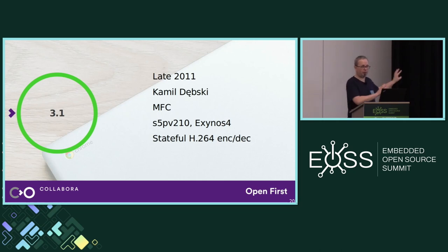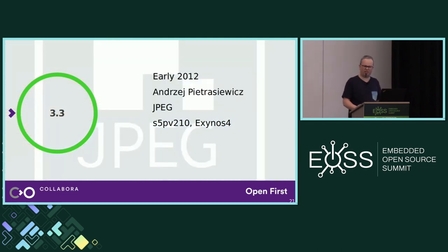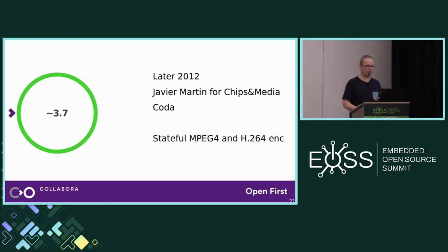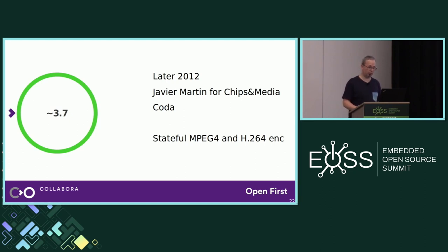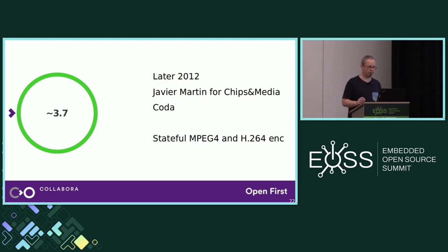The context of all these contributions was the Chrome OS team partnering with Samsung and Asus to create the first ARM Chromebook. I want to mention another driver — not because it's terribly important, but because it's important to me, because I contributed it. It was a driver for a JPEG codec found in the same chips as MFC, and I upstreamed it in early 2012 at kernel 3.3. Later that year, a very important moment happened: a video codec driver from another vendor landed upstream in 3.7, from Javier Martin writing software for Chips and Media. The driver was for Coda and featured stateful MPEG-4 and H.264 encoders. From this moment on, upstream support of hardware video codecs was no longer a Samsung monoculture.